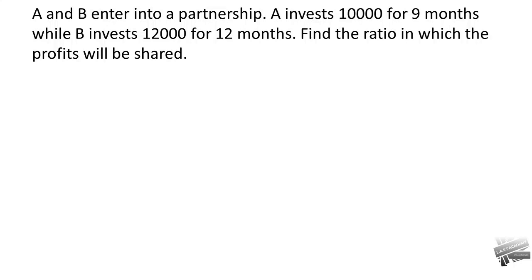A and B enter into a partnership. A invests 10,000 for nine months while B invests 12,000 for 12 months. Find the ratio in which the profits will be shared. This is an easy question, but I want to touch on a concept: partners share profits in the ratio of their capitals, but there is a catch. The ratio would not simply be 10,000 to 12,000.